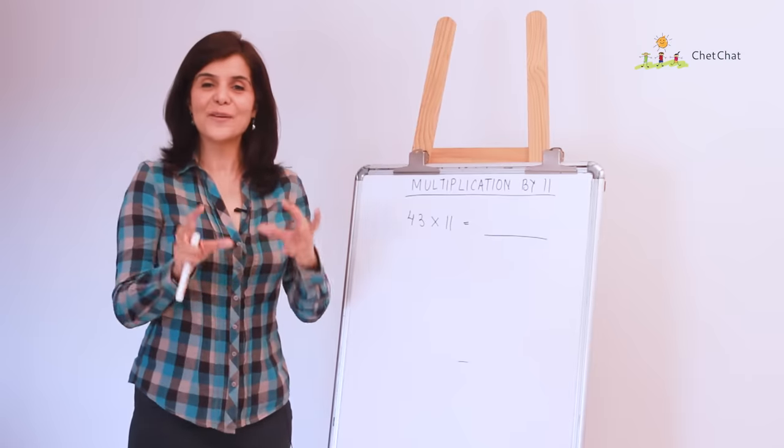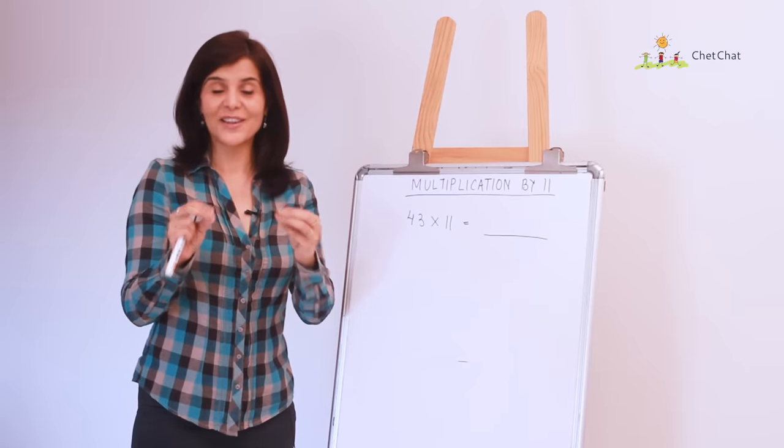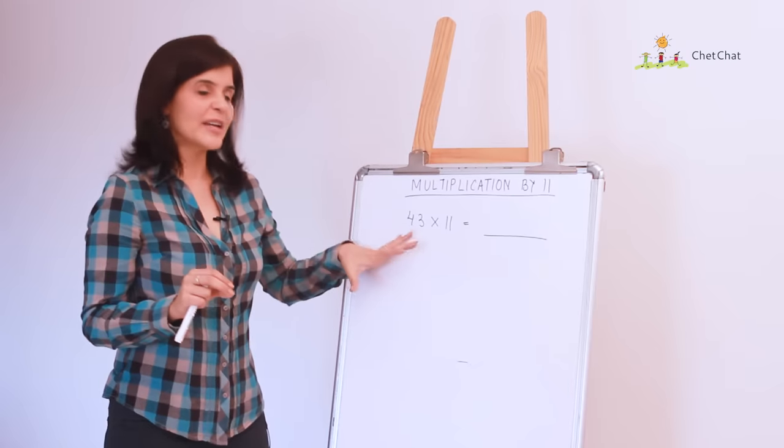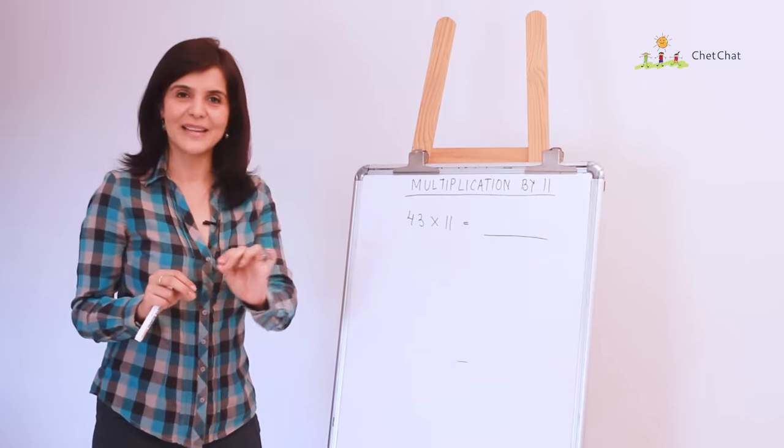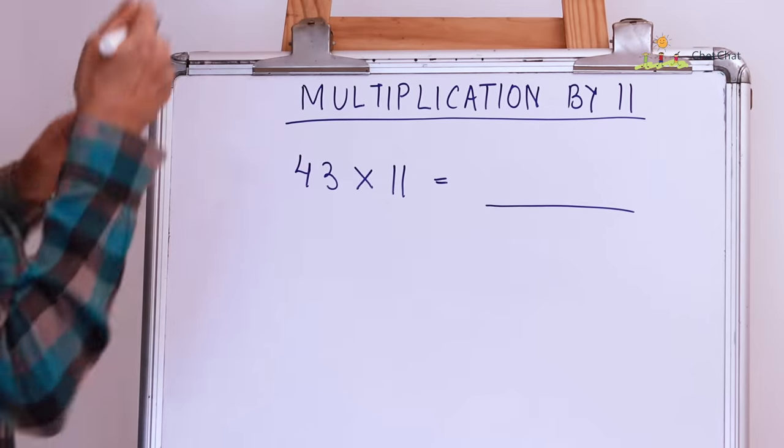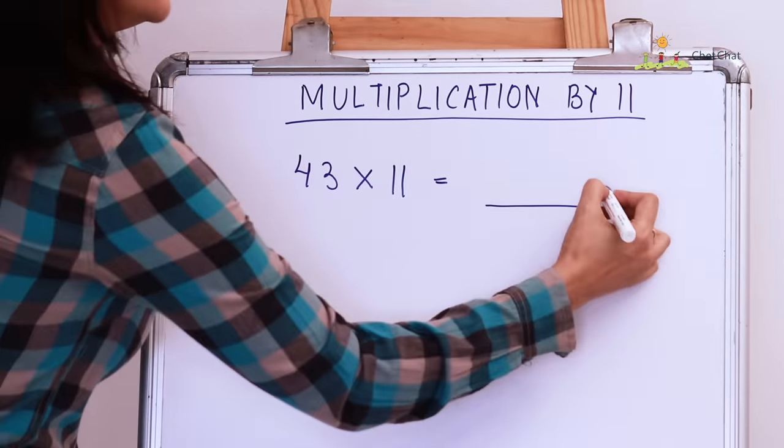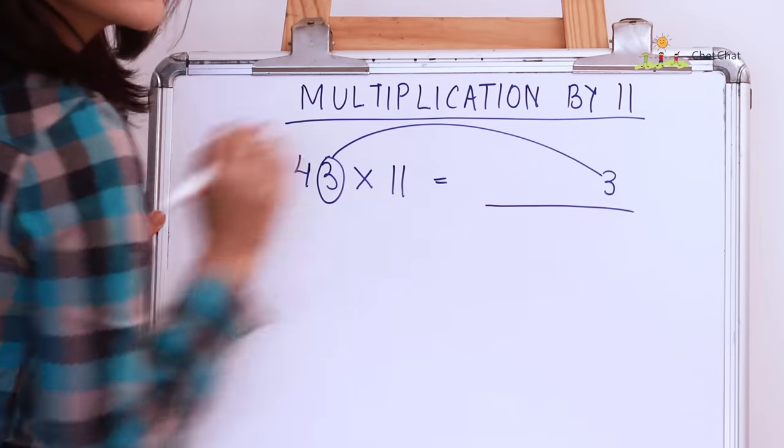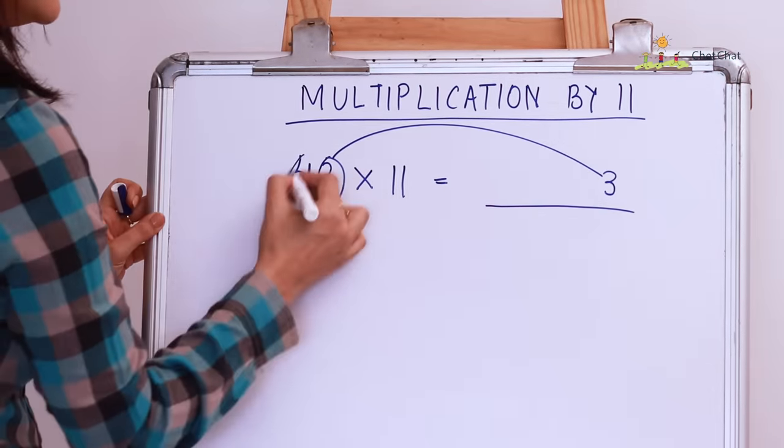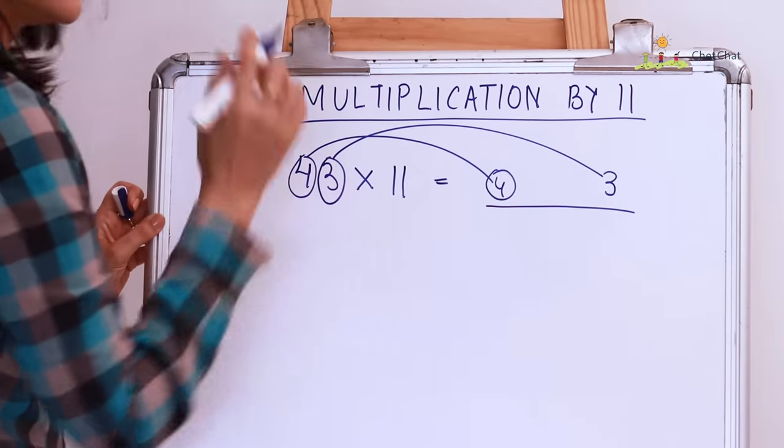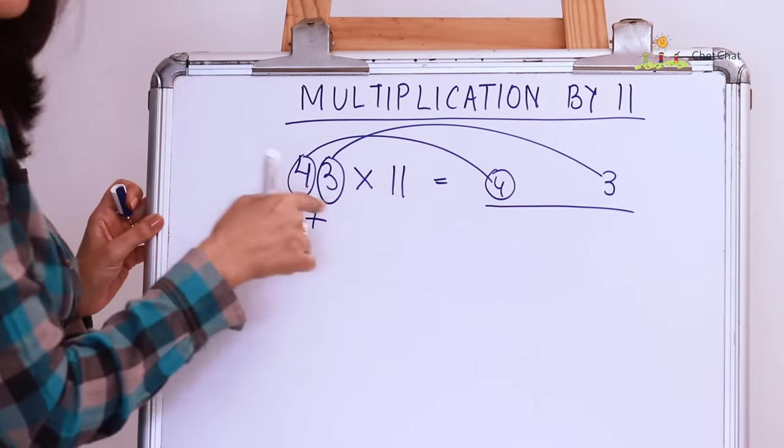Okay, so now a very simple trick. Trick number 4 is multiplication by 11 and I'm going to take a very basic example right now to explain this. Let's take 43 into 11 and when we multiply it, the units place is this. The first digit is this and the digit in the middle is the sum of these two. 473.